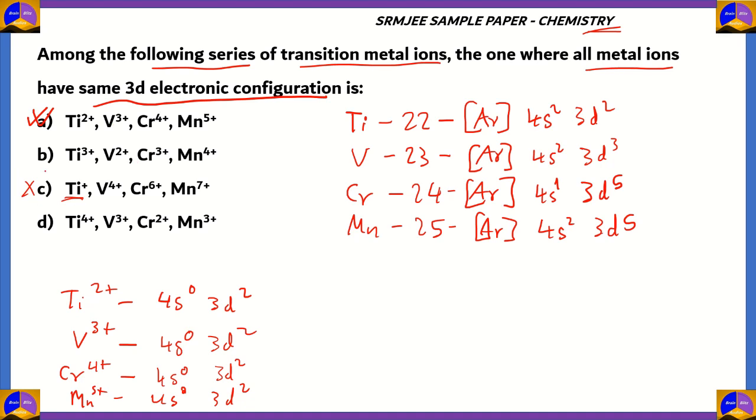If you were to look at the other options, Ti³⁺ will give you 3d¹ as the configuration, but then V²⁺ will give 3d³, which again is not equal. So B is incorrect. For Ti⁴⁺, it will be 3d⁰, and then for V³⁺, it will be 3d², which again makes the electronic configuration different. So therefore, options B, C, D are incorrect. The correct option is option A.